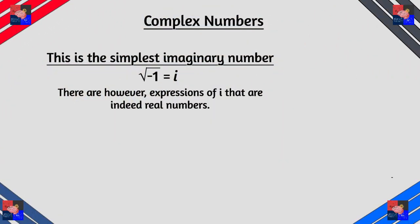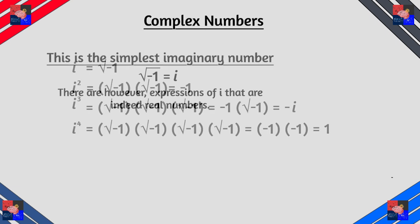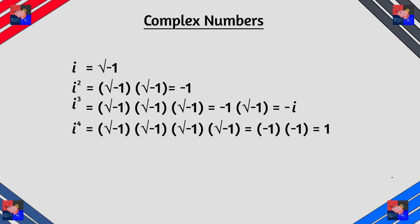Now i which is equals to the square root of negative one is the simplest imaginary number. But there are other expressions of i and some of these expressions are real numbers. So let's look at the simplest one.